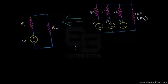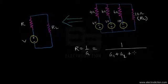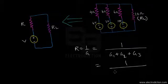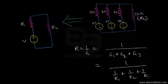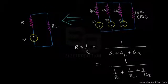R is given by 1 divided by G, where G is the summation of the conductances of all the arms. We can see that we have three voltage source and resistor arms in this network. We write the conductances as the reciprocals of the resistances.